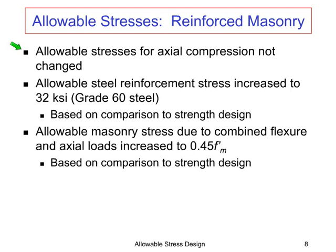We did increase the allowable steel reinforcement stress to 32 KSI, up from 24 KSI, based on a comparison to strength design. We also increased the allowable masonry stress due to combined flexure and axial loads to 0.45 F'm, which is also based on a comparison to strength design. At first glance it may look like we simply eliminated the one-third stress increase and then increased our stresses to compensate, but there was real justification and a lot of work behind that.